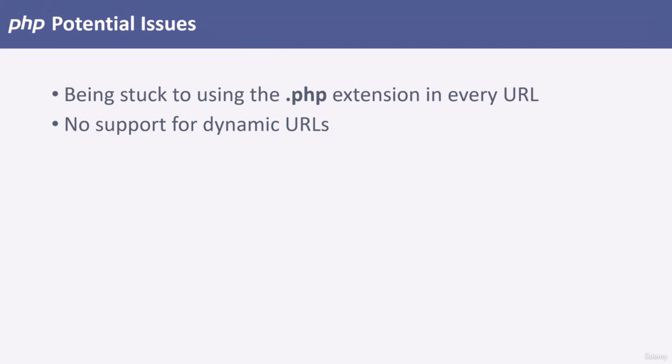More often than not, PHP developers resort to creating a custom routing system instead of relying on a web server's routing configuration. By doing so, developers have more flexibility and control over what resources get delivered to browsers. That's going to be our first step with our application — we're going to start developing a router. In the next lecture, let's get started by modifying Apache's configuration.